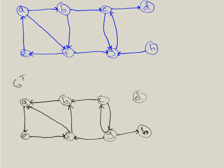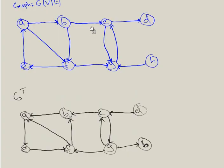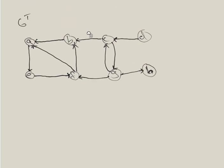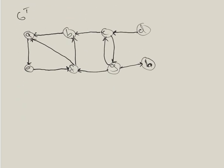This points to H and this points to C. Let me double-check everything to make sure it's correct. So this is the way I like to do it — I create the transpose graph first, and then I do DFS on this transposed graph. If you don't know what DFS means, look at other tutorials or I'll upload one soon.